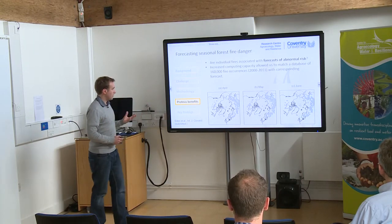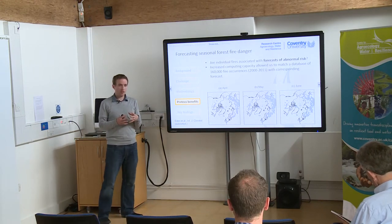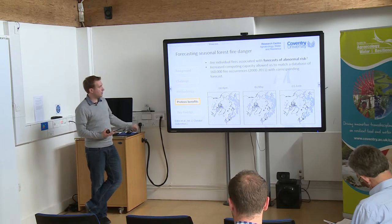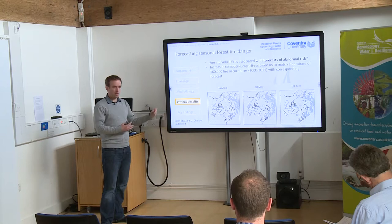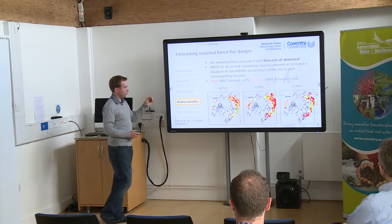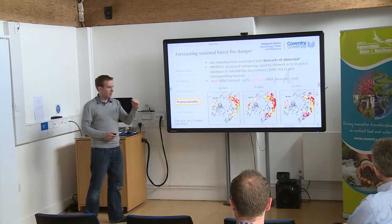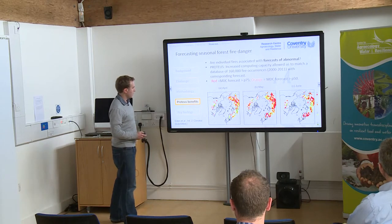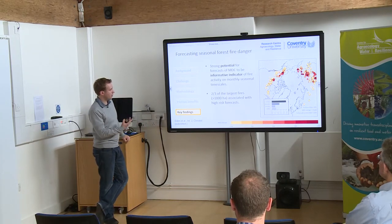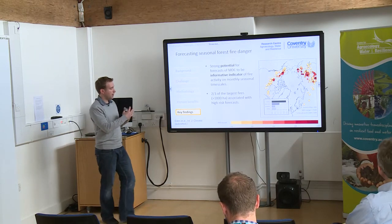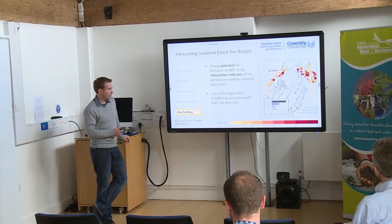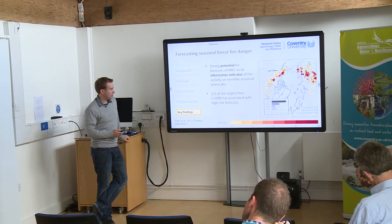What Proteus has allowed us to do is ask: to what extent are individual fires associated with particularly high forecasts? The increased computing capacity allowed us to take a database of 160,000 fires over a 12-year period and match these with corresponding forecasts. Where it's red, the forecast is above the 75th percentile; where it's orange, it's above the median. The paper has just been submitted, but there's strong potential for this type of forecast to be informative on longer timescales where there's currently a gap. We find that at least two-thirds of the largest fires — those greater than 1,000 hectares — are associated with high-risk forecasts.